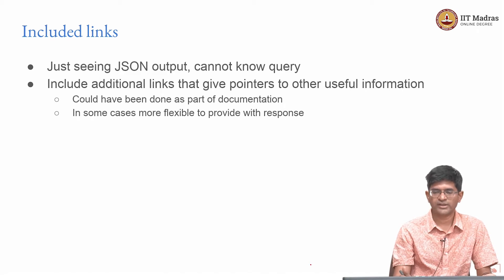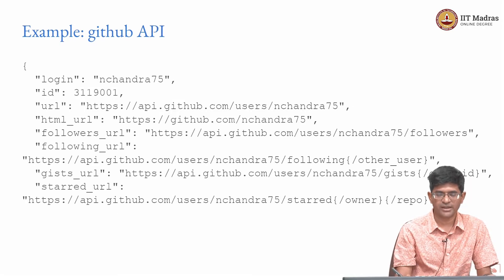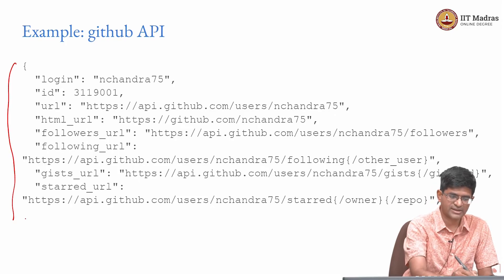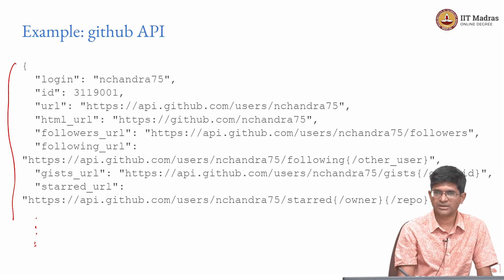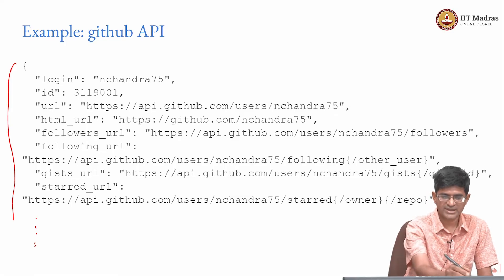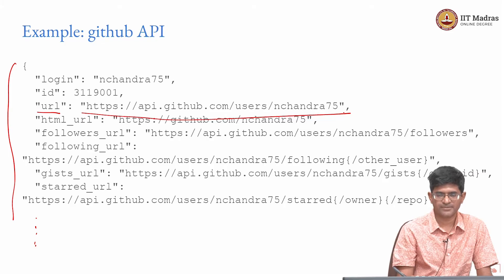In addition, you could give pointers to other useful information. A good example is the GitHub API — if you go to api.github.com/something, you get a chunk of JSON. They give you the URL that was used to get that information as a self-link, so if you go back to that URL you will find exactly the same JSON again. There is also a unique ID, which means even if you change your login name the ID will remain unchanged, so you can translate an ID into a login and get to the data you need.